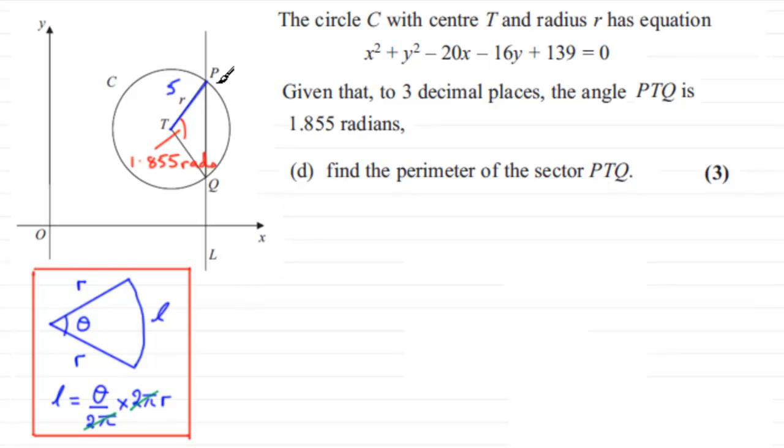We're going to find out the length of the arc PQ. Let's just call that length l. So we can say that l equals the angle—it's in radians, 1.855—we compare it with 2π, which is the amount of radians in one full turn. So this is the fraction of the circumference.